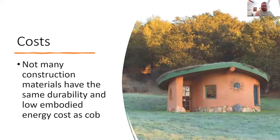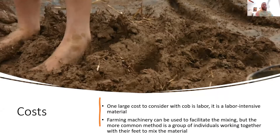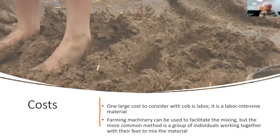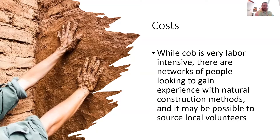Some other things to factor into the cost of cob: the biggest one is labor. It's very labor intensive to mix the materials. Some people use farming machinery to try to cut down on that labor cost. But one neat way to do it, as you see in the photo here, is mixing it by foot. If you have enough people to participate in a build, it can be very efficient. And with us being in this region, it may not be too difficult to source local volunteers looking for opportunities on a natural construction build — so the value of free hands is something to consider.